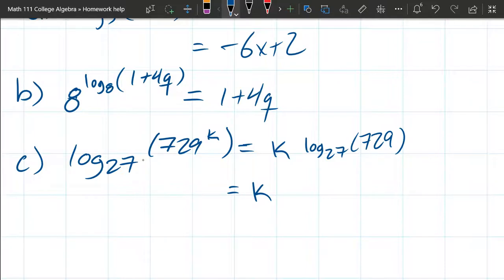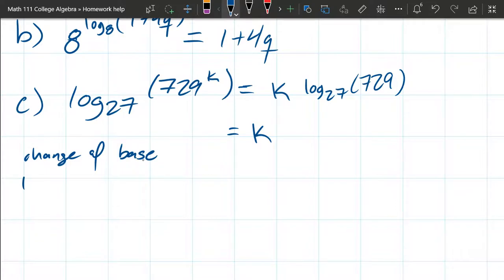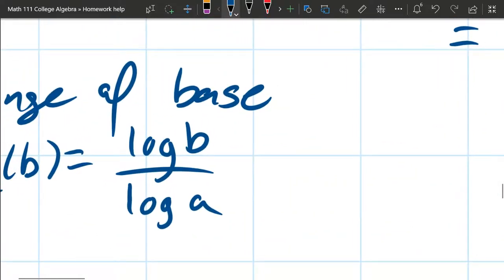So there's a change of base. If you have a nice calculator you can actually just compute the number of this log right here. But if you don't have a fancy calculator, you need to use change of base. Change of base says log_a(b) = log(b)/log(a), and what happens when you don't see a base written in here, that is an implicit base 10. I'm going to erase these 10s out of here.